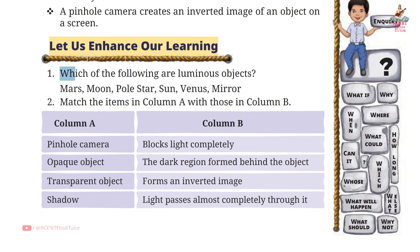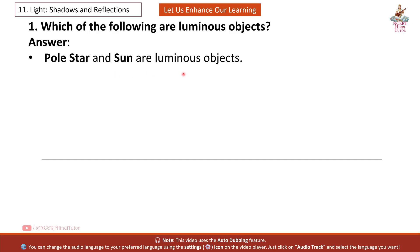Question 1: Which of the following are luminous objects? Answer: All star and sun are luminous objects. Mars, Moon, Venus and Mirror are non-luminous. They reflect light from the sun.